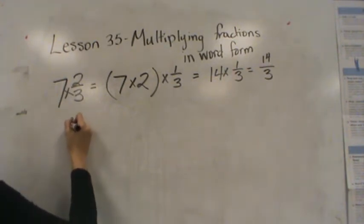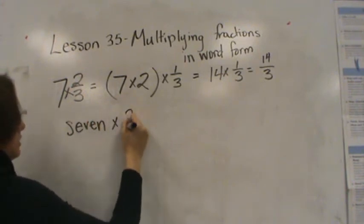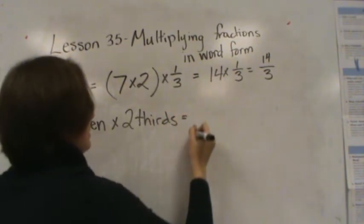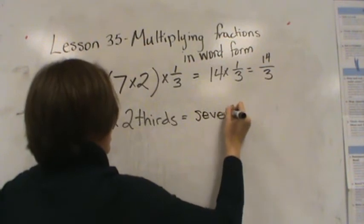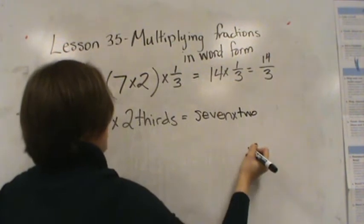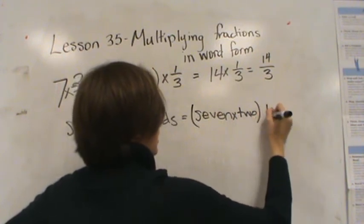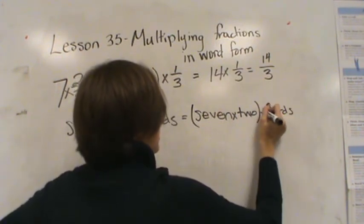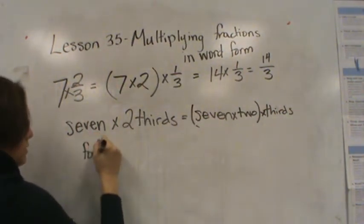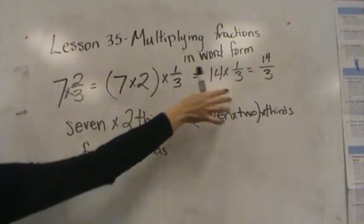Now let's do this in word form. Seven times two-thirds is the same as saying seven times two, in parentheses, thirds, which is the same as saying seven times two is 14 thirds.